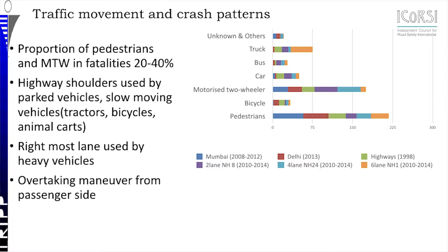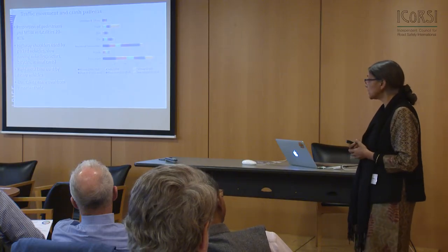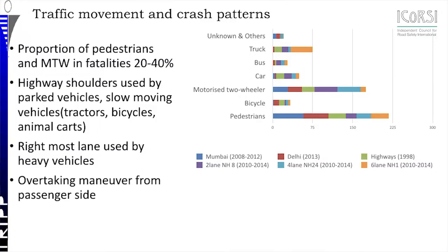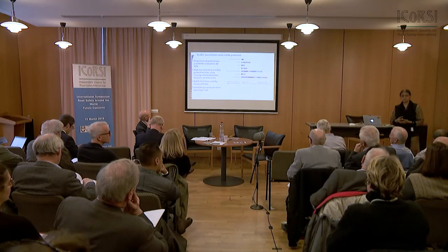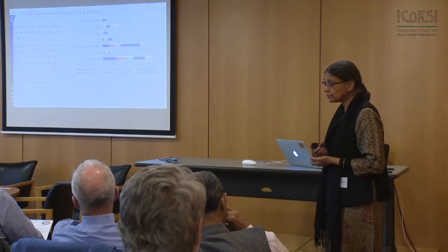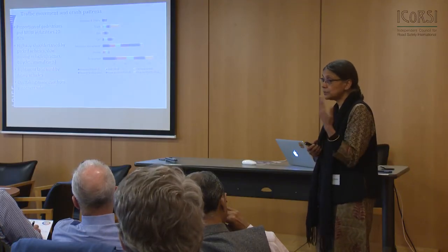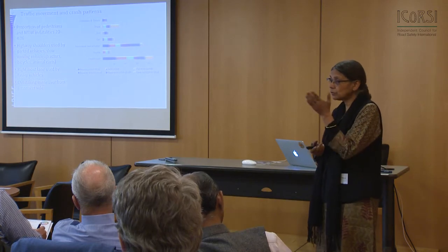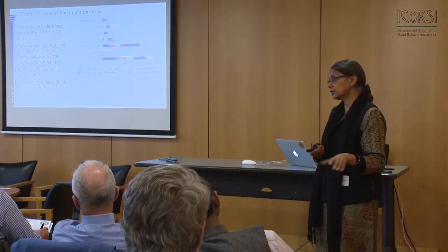Another observation is how highway shoulders are being used. The standard says shoulders should be 1.5 to 2.5 meters wide, but in the situations we are dealing with, shoulders are being used by slow-moving vehicles including agricultural vehicles like tractors, bicycles, and animal carts. As a result, the shoulder is not really available for its original purposes — providing space for breakdowns, or for a vehicle that runs off or skids off the road.